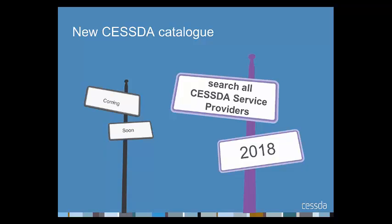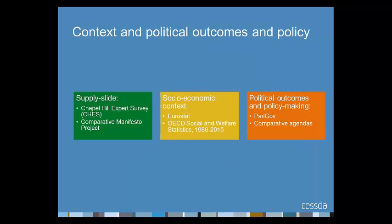An important announcement: CESDA is in the process of developing a new catalogue, due to go into service in 2018, which will allow you to search across all CESDA service providers. A final source of data to highlight is a range of resources relating to the context and outcomes of political behaviour — for instance, data sets from expert surveys on the positioning of political parties, data sets with coding from political party manifestos, and data sets containing information about parliament and government composition, policy agendas, and social expenditure.